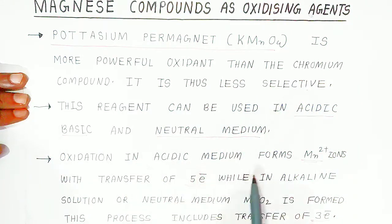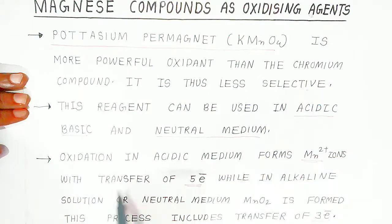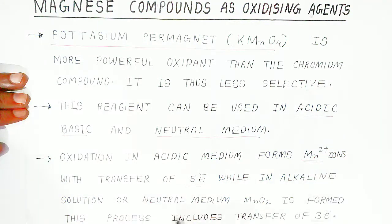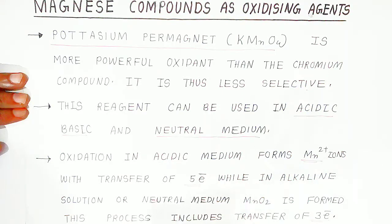Oxidation in acidic medium forms Mn2+ ions with transfer of 5 electrons. While in alkaline or neutral medium, manganese dioxide is formed. This process includes transfer of 3 electrons. So in acidic medium there is a transfer of 5 electrons, and in alkaline or neutral medium there is a transfer of 3 electrons.